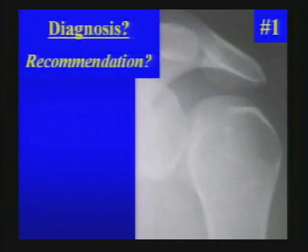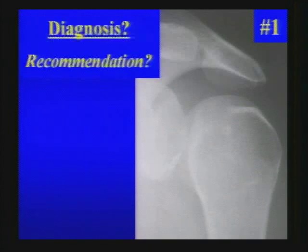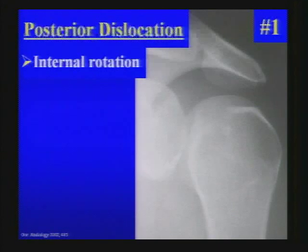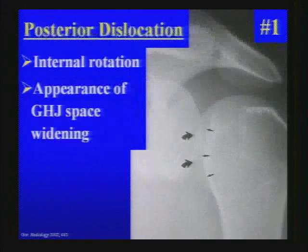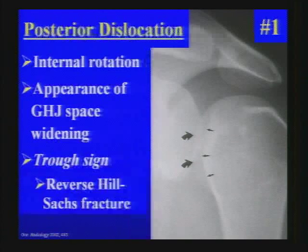We're going to go pretty quickly talking about some interesting cases that are practical not only in everyday life but also in the month of May/June. Here we're dealing with a posterior shoulder dislocation. You can see on this frontal radiograph the humeral head is in internal rotation, giving the appearance of glenohumeral joint space widening. Note the subtle trough sign, which is a reverse Hill-Sachs impaction fracture.